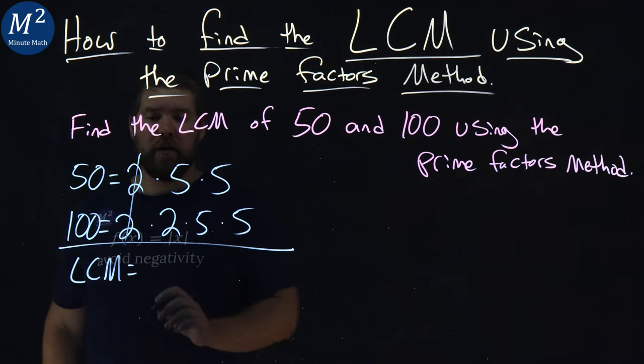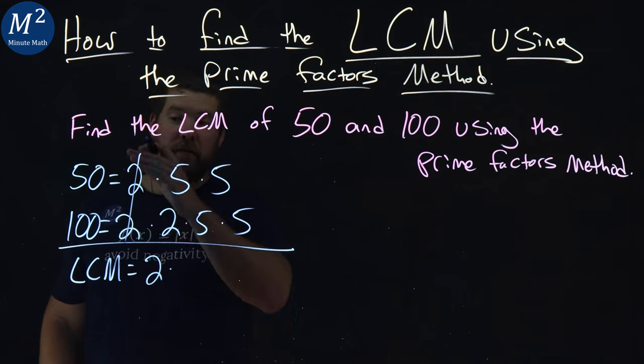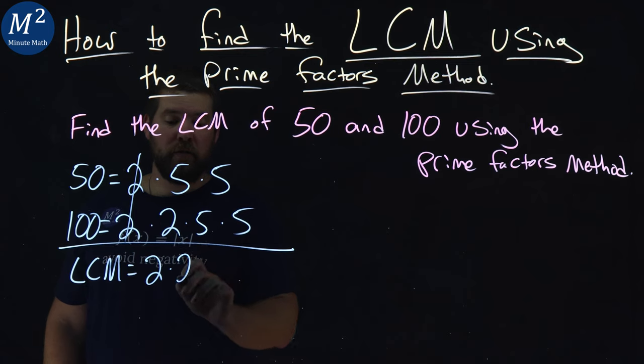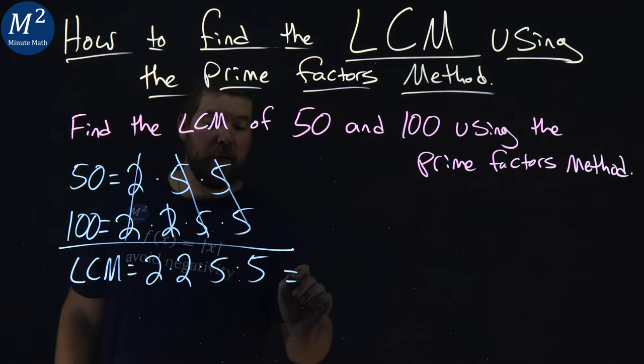So these 2s come together, we write 1, 2 here. There's no more 2s in the 50, so we bring the 2 down from here, right there from 100. 5s come together, 1, 5 down here, these 5s come together, 1, 5 down there.